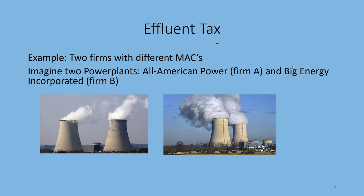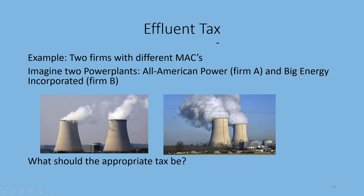Welcome back Highlanders to the second lecture video for Chapter 6 in our Econ 143 class. Remember when we left off last time, we were talking about using an affluent tax — a tax per emission — to give firms incentive to reduce their number of emissions to the socially efficient or optimal amount of pollution. We left off by talking about two firms with different marginal abatement cost curves: All-American Power, Firm A, and Big Energy Incorporated, Firm B. Given their respective marginal abatement cost curves, we needed to calculate the appropriate tax and the optimal number of emissions for each firm.